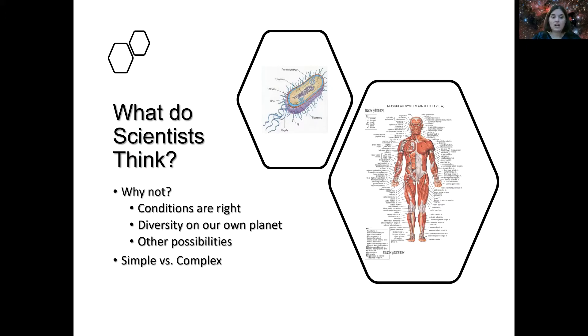I mean, if the conditions are right and everything is great, there's a good chance you can find life. And if you look at our own planet, we have such a wide diversity of different animals and organisms that it's possible that we can see different types of life beyond our planet. And not to mention, there's other possibilities for life to exist.